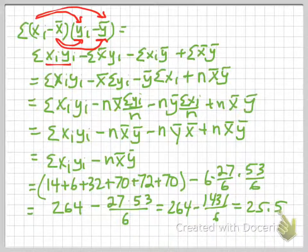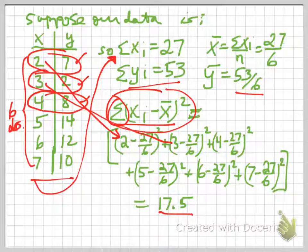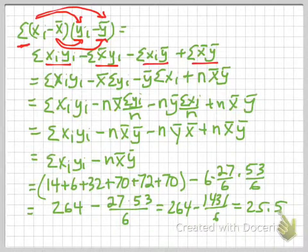So I get xi times yi, x-bar times yi, xi times y-bar, and x-bar times y-bar. And we have the summation sign here. So we need to carry that summation sign across each one of these four terms, which we've done here.